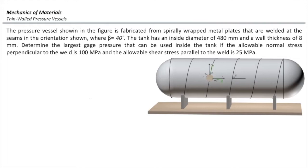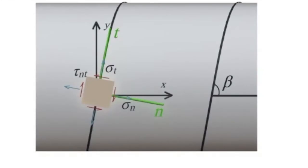In this case, we assume that the welding property is given and we want to determine how much is the maximum allowable pressure that we can apply. This requires several steps. First, let me zoom into that part and show the stress element.